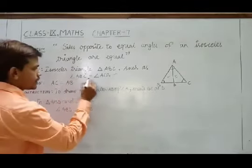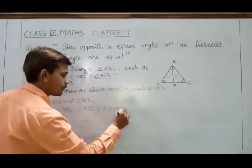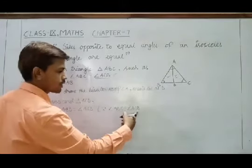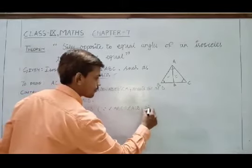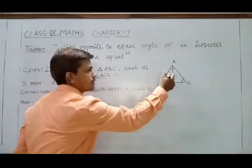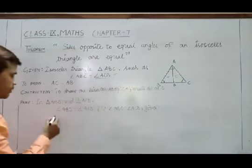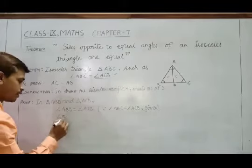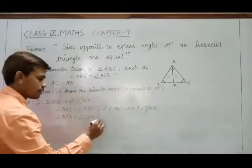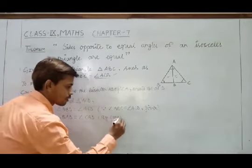Angle ABD equals angle ACD because angle ABC equals angle ACB, which is given. Also, angle BAD equals angle CAD because AD is the bisector of angle A — this is by construction.